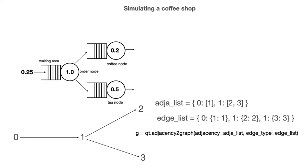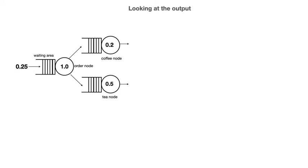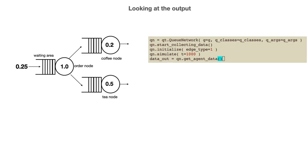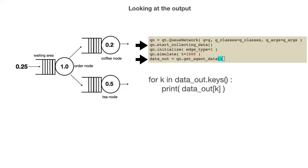Once the queue network is set up, we initialize the edges of type 1 to indicate that this is the only place where agents arrive from the outside world — that is, when they join the queue to give their order to the teller. We can then run simulations of our queue network in the usual way, and also get information on how each agent interacted with the queue network using qn_start_collecting_data and qn_get_agent_data, as discussed in my other video on queuing tool. We could print the information for each agent using a loop like the one shown here.